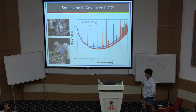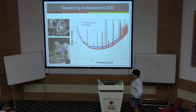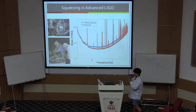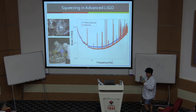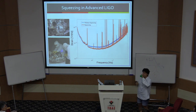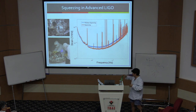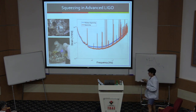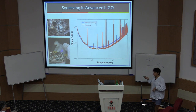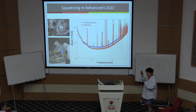The improvement is sufficient that in observing run 2, advanced LIGO was seeing roughly one event per month. In observing run 3, we're already seeing more than one per week. So this improvement is actually quite significant even though it doesn't look very important on a graph with this many orders of magnitude on it.